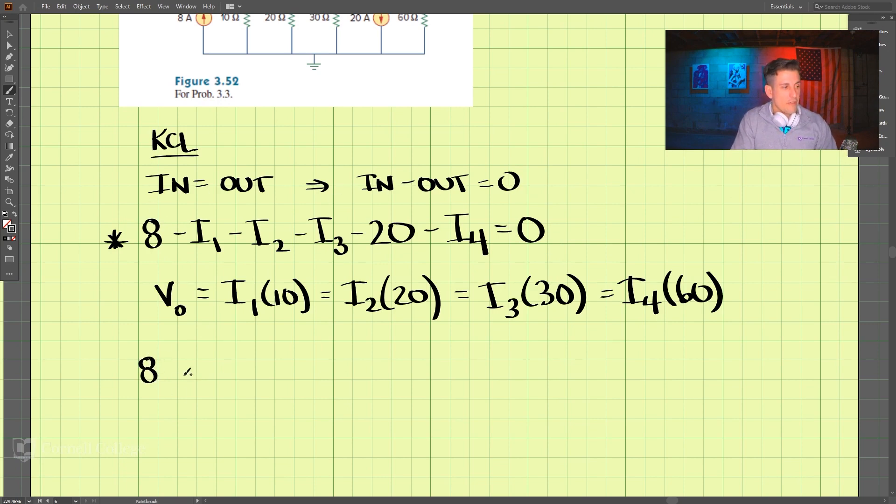So we have 8 minus I1, and we know that I2, so if we solve for I2, we know I2 is equal to 10 over 20 I1, because all of these are equal. So minus 10 over 20 I1.